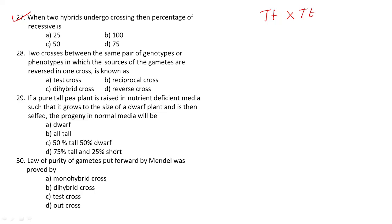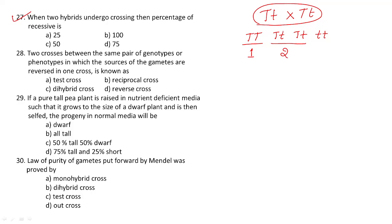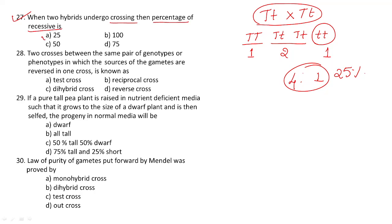When we cross capital Tt × Tt, we obtain capital TT, capital Tt, capital Tt, and small tt — the standard result. Out of four individuals, one is completely dominant, two are heterozygous and also show the dominant character, and only one individual is recessive in nature. So out of four, if one is recessive, that is 25 percent. When two hybrids undergo crossing, the percentage of recessive individuals is 25 percent.